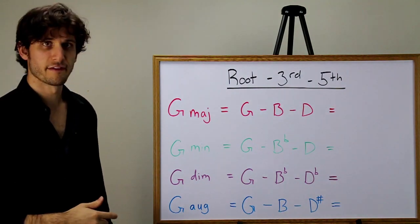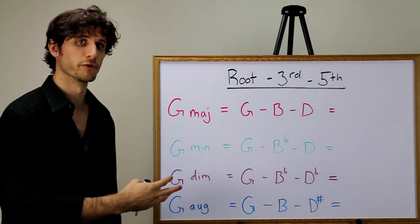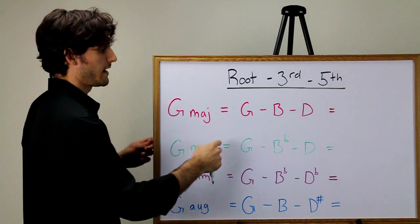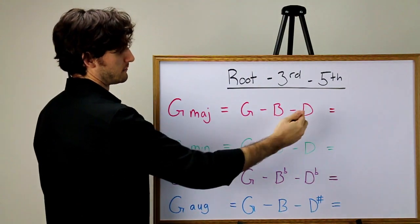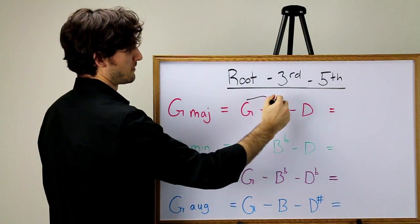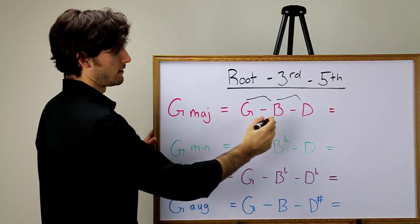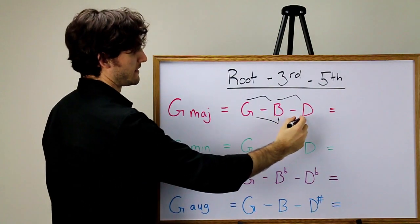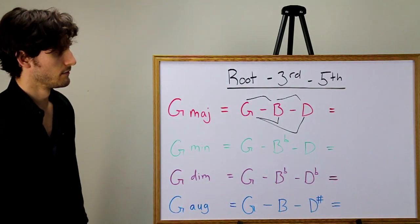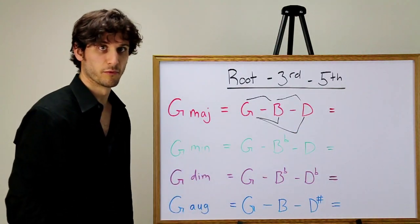The third and the fifth are defined as intervals away from the root. So in the previous model, we had this interval and then this interval. Now in this model, we have this interval and then this interval. Both of these intervals are defined as away from the root.